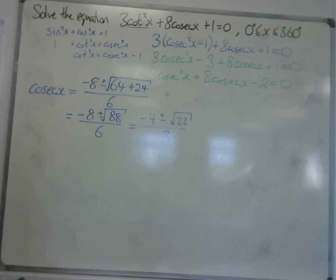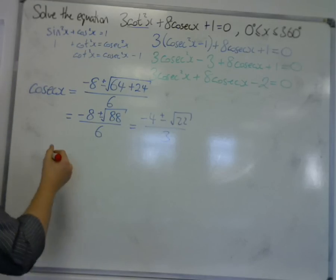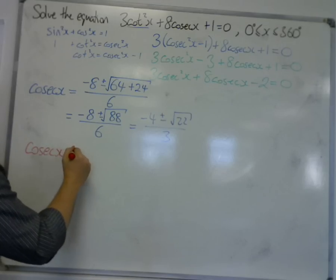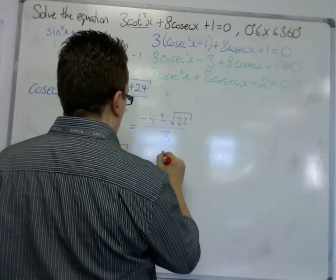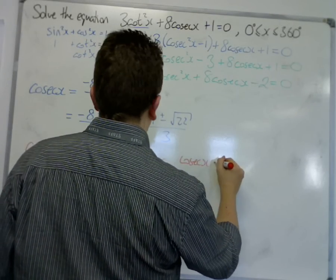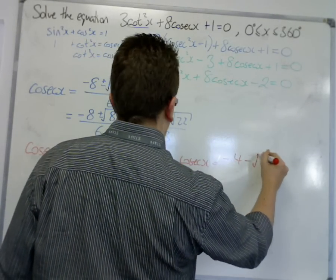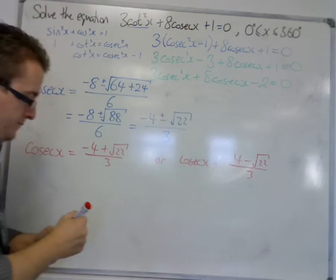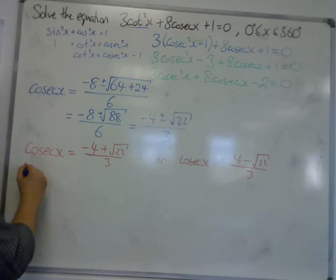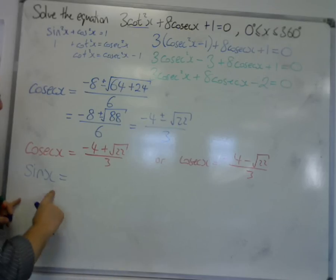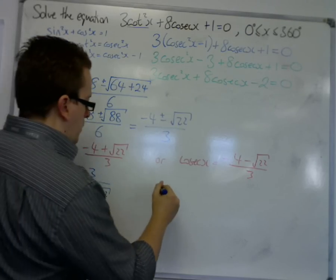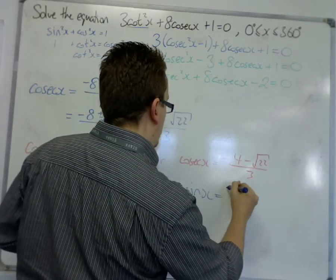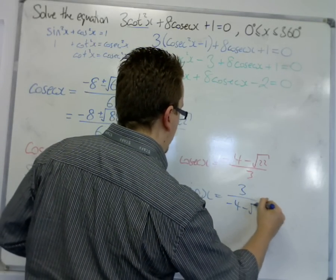So we either have cosecx = (-4 + √22)/3, or we have cosecx = (-4 - √22)/3. So sinx, because cosec is 1 over sine, sine must be 3/(-4 + √22), or sinx is -3/(-4 + √22).